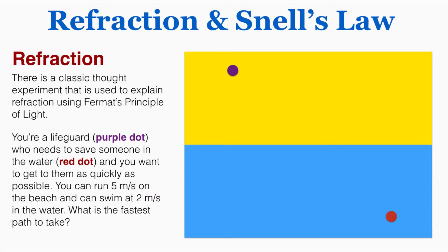There's a classic thought experiment that's used to explain refraction using Fermat's principle of light. We're going to pretend that you're a lifeguard, you're the purple dot who needs to save someone in the water, the red dot, and you want to get there as quickly as possible. You can run five meters per second on the beach and can swim at two meters per second in the water. So based on that information, what is the fastest path that you can take?